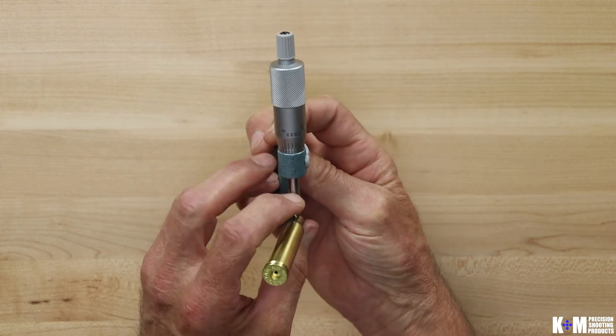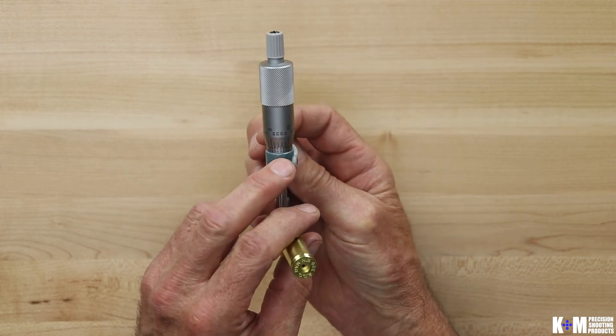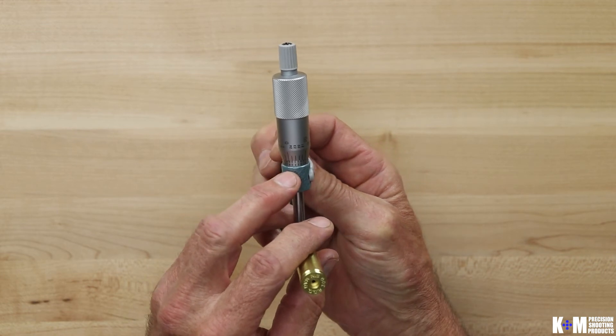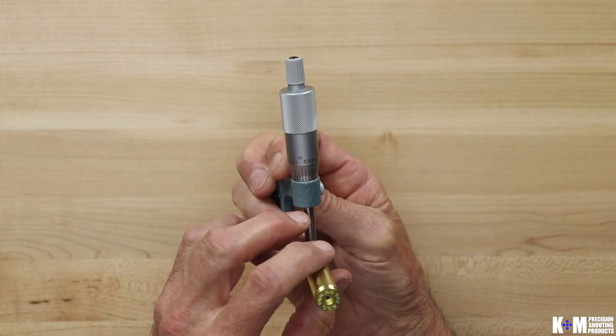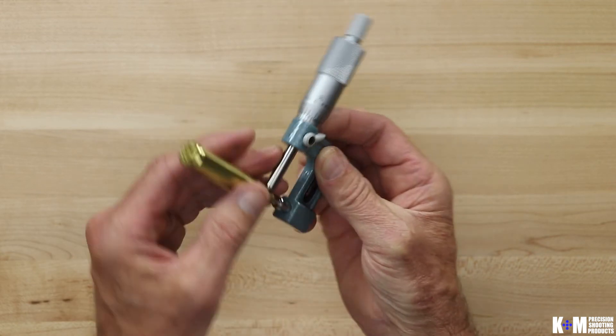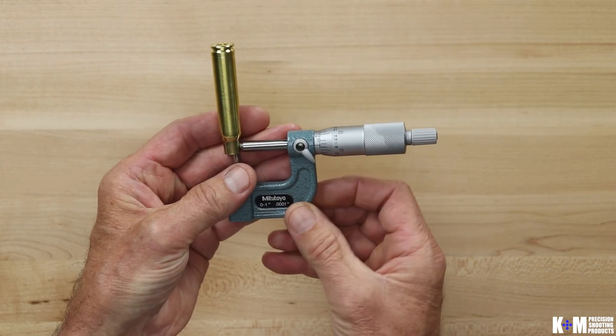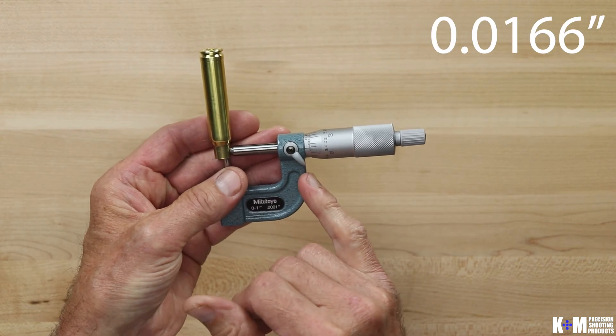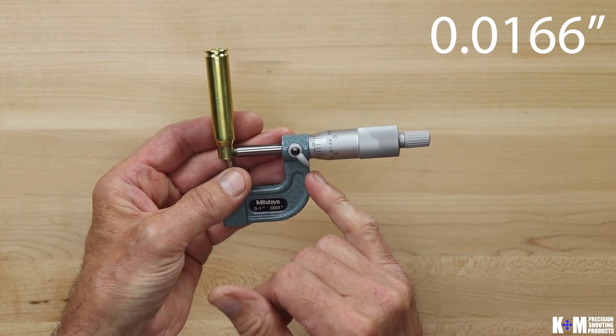To get our fourth decimal place simply roll over to the sleeve. And what you're looking for now is which one of these divisions best lines up and matches a marking on the spindle itself. And in this situation it looks like it's six. So the measurement for this particular neck wall thickness would be 0.0166. That would be our neck wall thickness for that particular cartridge.